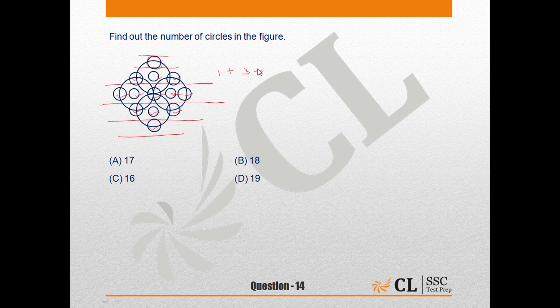So 1 plus 3 plus 5 plus 3 plus 1, there are as good as 13 circles. After these smaller circles, we have just 4 bigger circles. So I can say that there are altogether 17 circles.